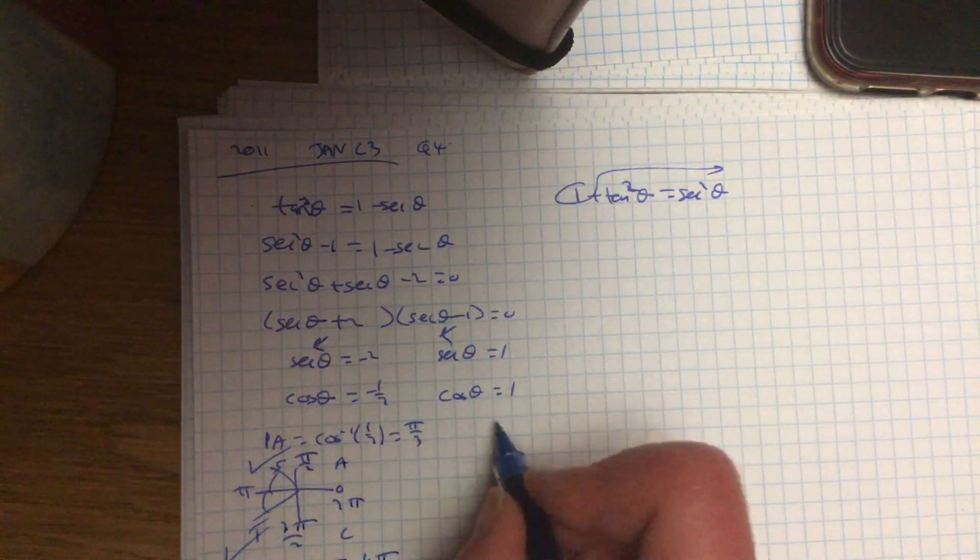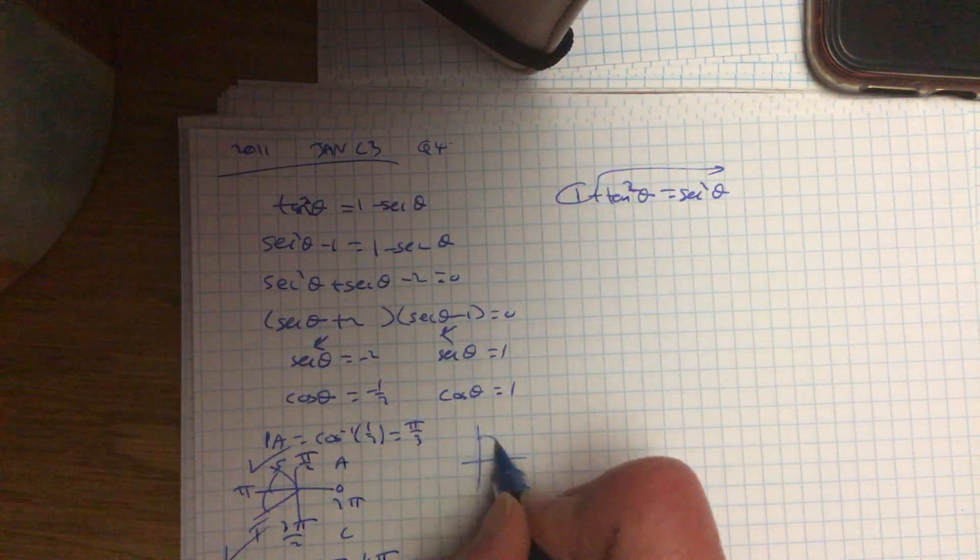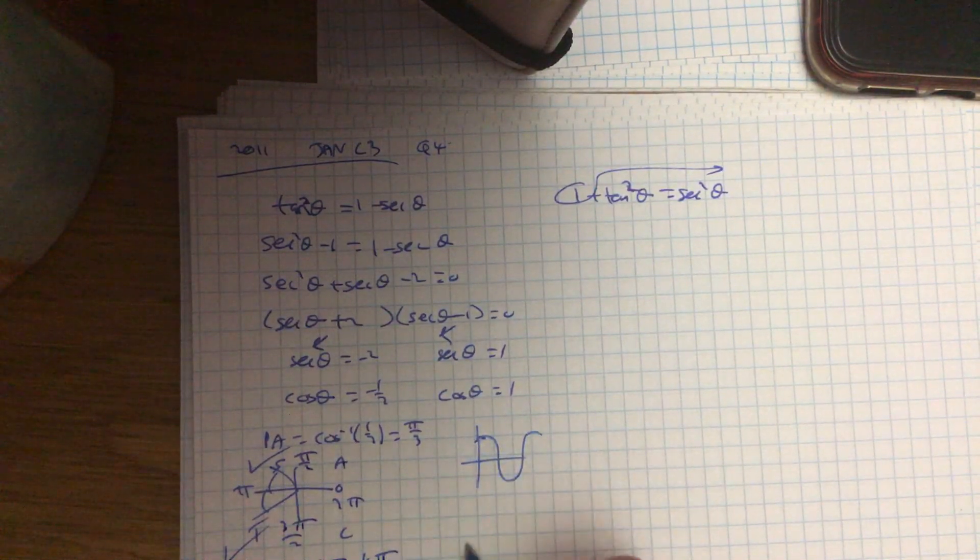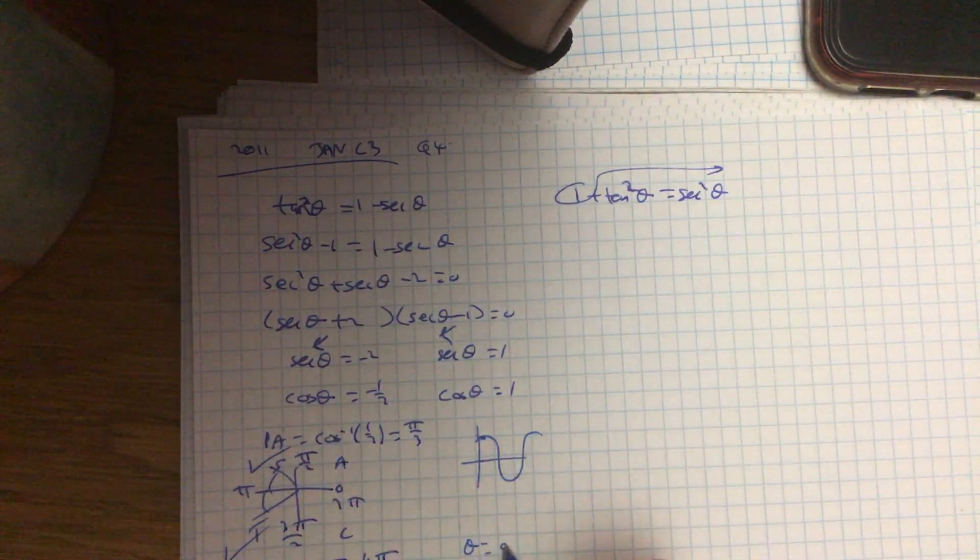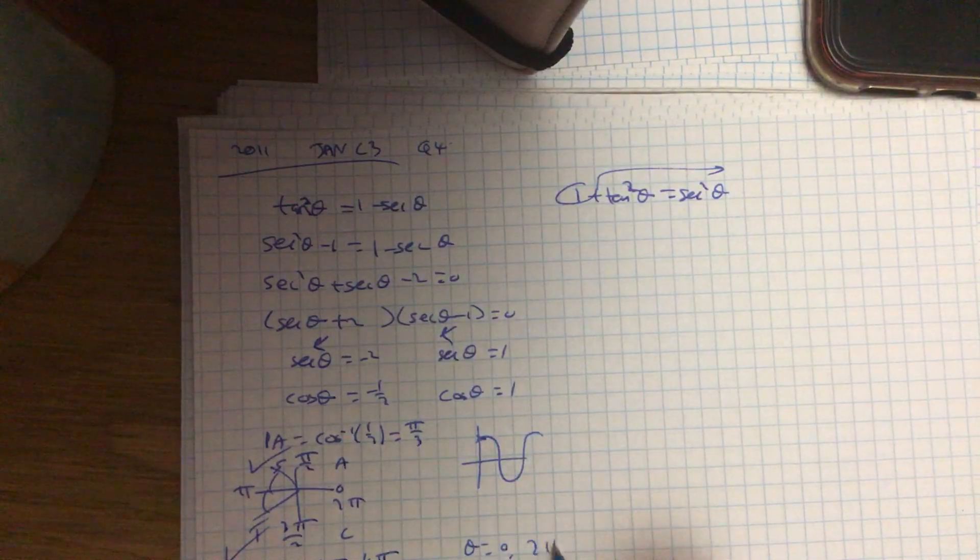To find where cos equals 1, I would do it through the graph. It equals 1 at 0 and it equals 1 at 2 pi.